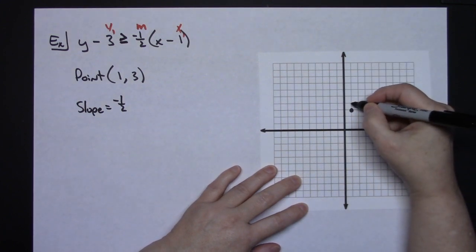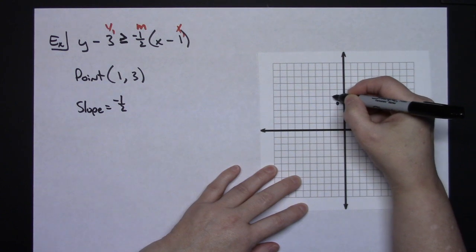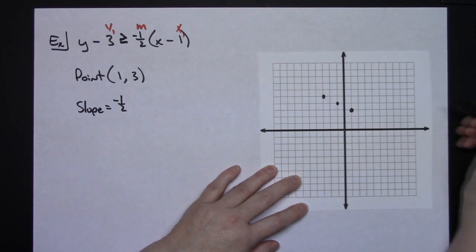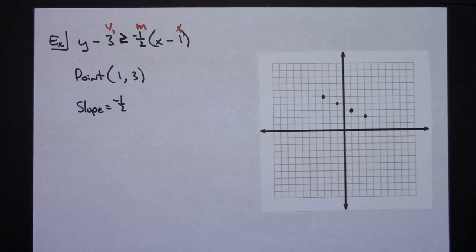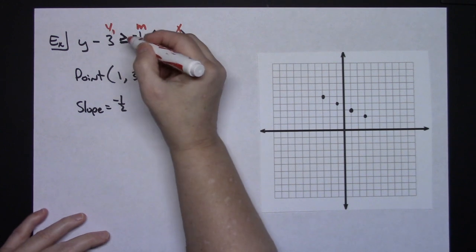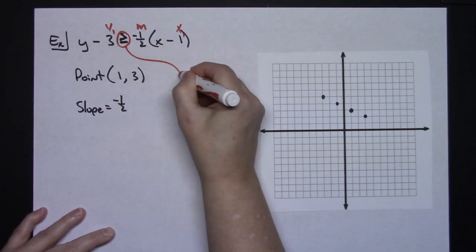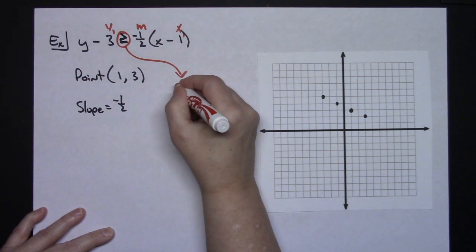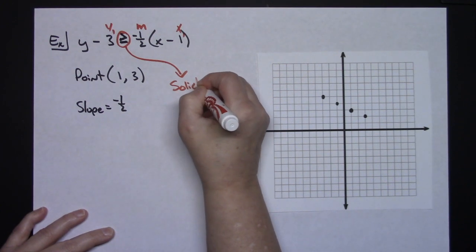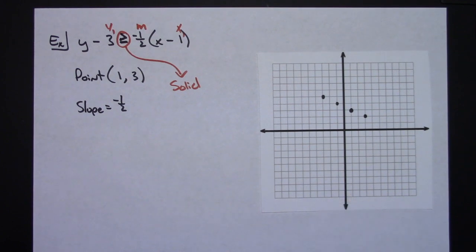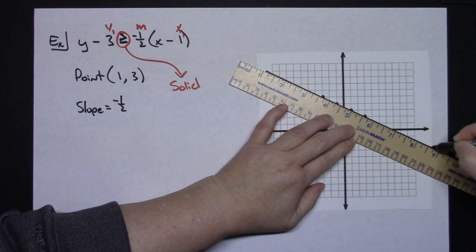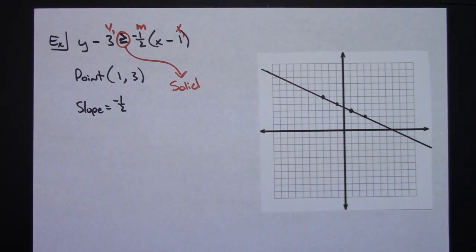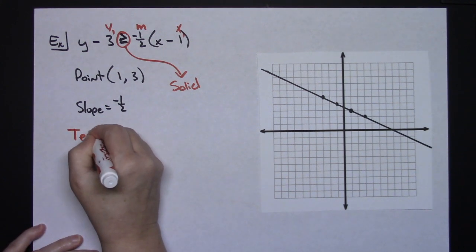With a slope of negative one-half, I rise 1 and go left 2, and I can also go down 1 and right 2 to follow the same slope. Because the inequality includes the equal-to part, I know I'm going to have a solid line — just like it appeared when I graphed the equation.